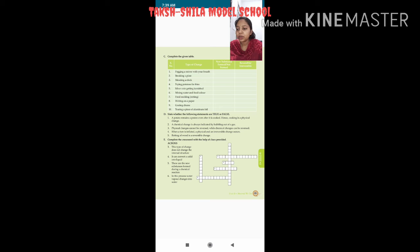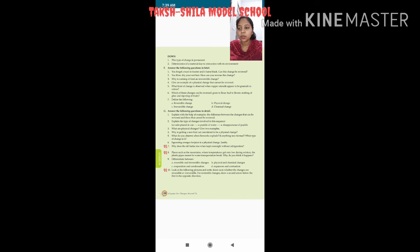Next across clue — in this process, water vapor changes into water — that is condensation. Down clues: first — this type of change is permanent — answer is chemical change. Second — deterioration of a material due to interaction with its environment — that is corrosion, jaise ki iron environment ke touch mein aane se rust banta hai, that process is rusting.